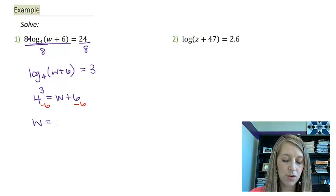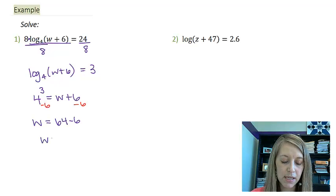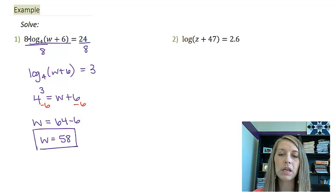So 4 to the third is 64. 64 minus 6 is equivalent to 58. The solution to this equation is w equals 58.